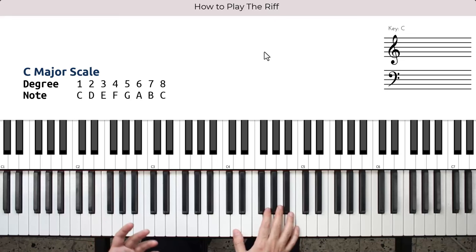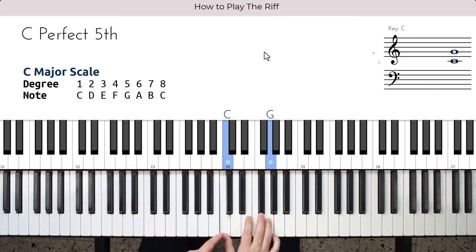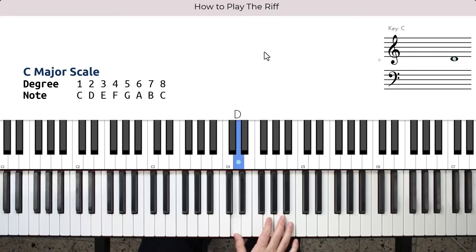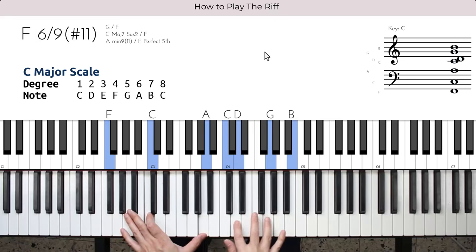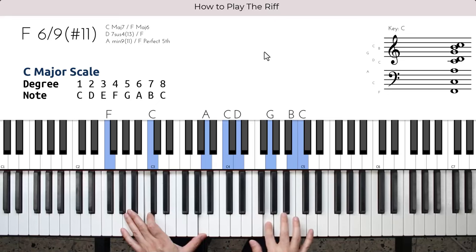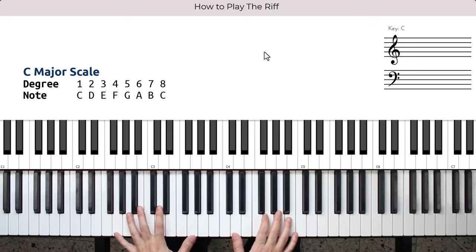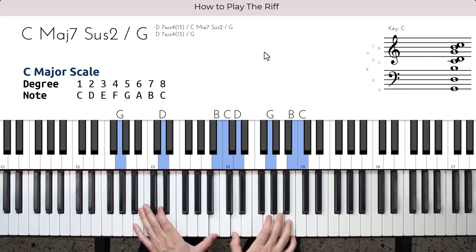The last idea that we can put in here is that it turns out that not only the first and the fifth degrees of the C major scale work well with these three chords, but also the second and seventh degrees, being the D and the B. For the F major, for the G major, and for the A minor.